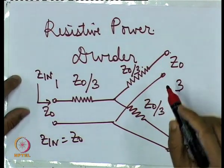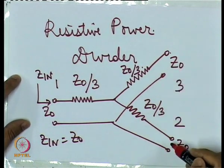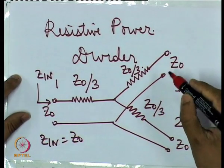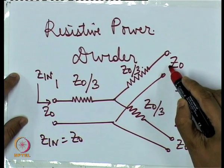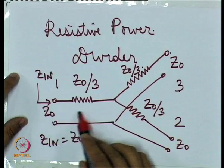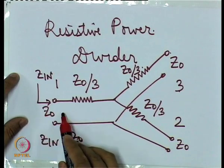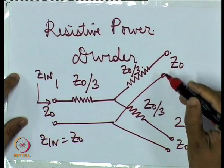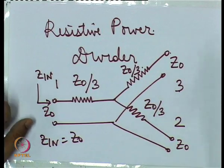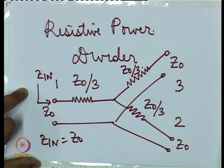However, any signal entering port 3 will also have a component appearing at port 2, in addition to the component appearing at port 1. In some applications it is desirable to isolate ports 2 and 3 — that is, power division is only from port 1, and when a signal enters port 3 no component appears at port 2, or vice versa. One such implementation uses a circuit known as the Wilkinson power divider.